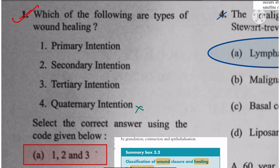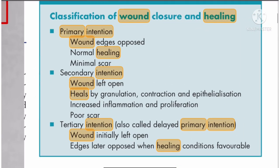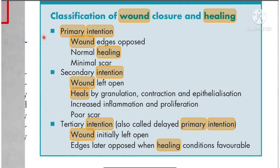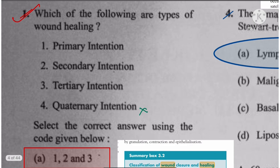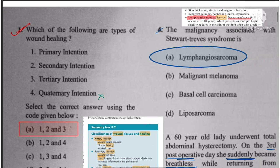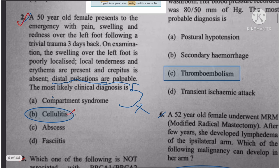Question 1: Types of wound healing. The classification of wound closure and healing includes primary intention, secondary intention, and tertiary intention. There is no quaternary intention. So the answer for question 1 is 1, 2, and 3.